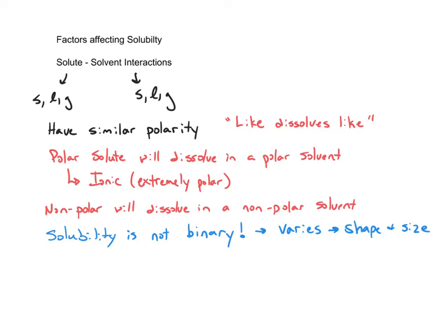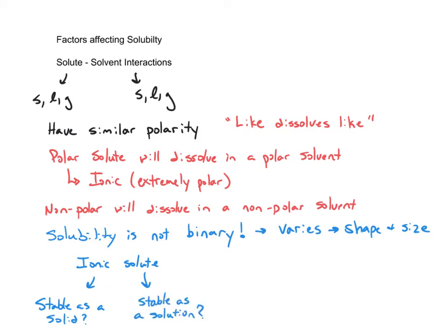Just because something is ionic — an extremely polar compound — doesn't necessarily mean that it will dissolve in water. When ionic substances are introduced to a polar solvent like water, the ionic substance has a decision to make: is it more stable staying together as a solid in its ionic solid state, or is it more stable if the ions break up and form ion-dipole interactions with water? If the ionic substance is more stable in its solid state, then it will not dissolve. Nothing says that ionic compounds have to dissolve in a polar solvent like water.